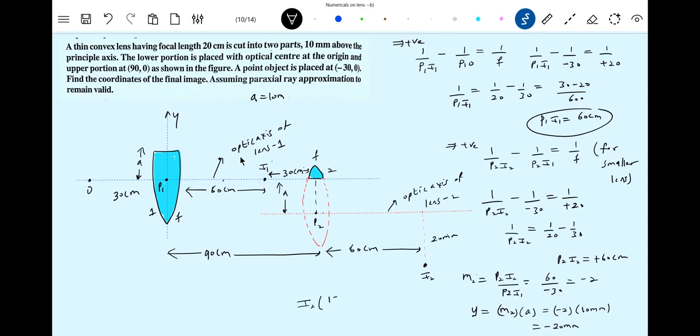So what should be the coordinates of I2? Coordinates of I2 should be 90 plus 150 centimeters plus a, which is how much? 10 millimeters. 90 plus 60 is 150 centimeters. This is the origin, so this is 10 millimeters, 20 millimeters. So the rays after refraction... You try it, I don't have a place to draw the ray diagram. What is I2? Coordinates of final image.